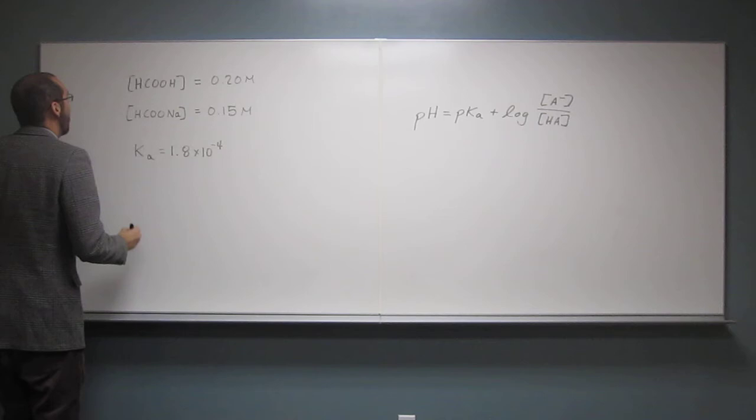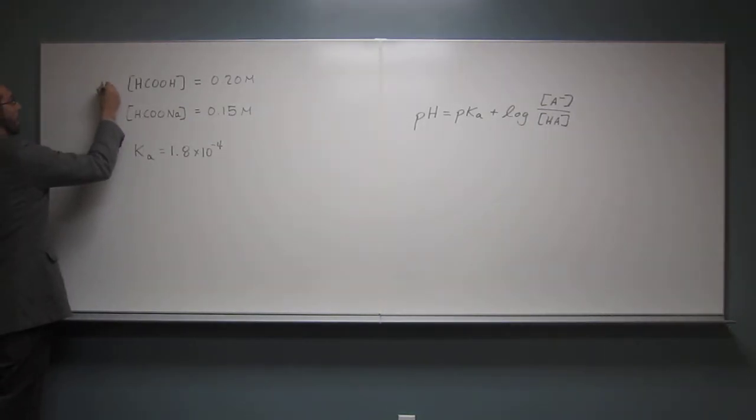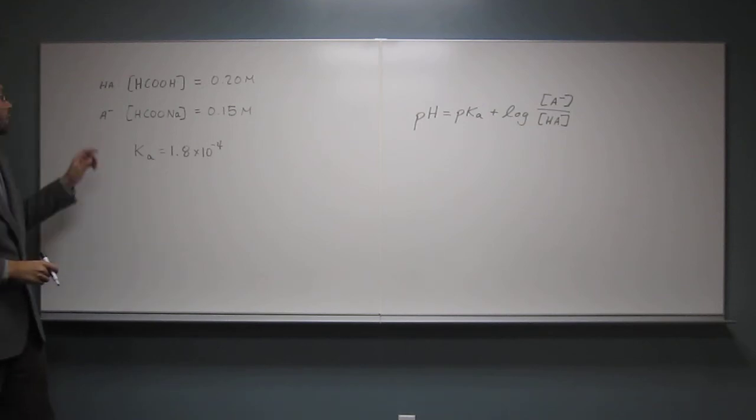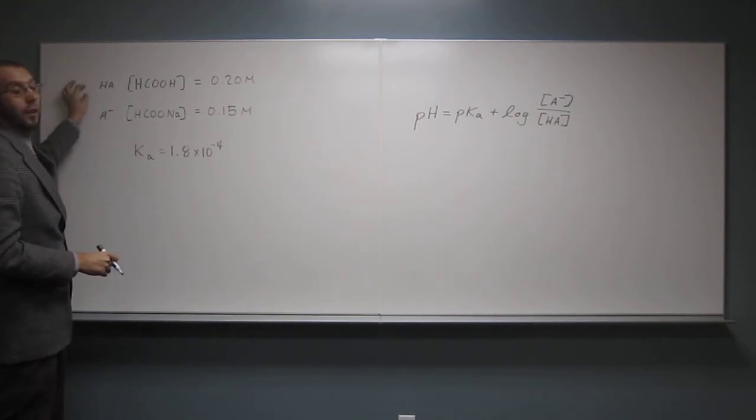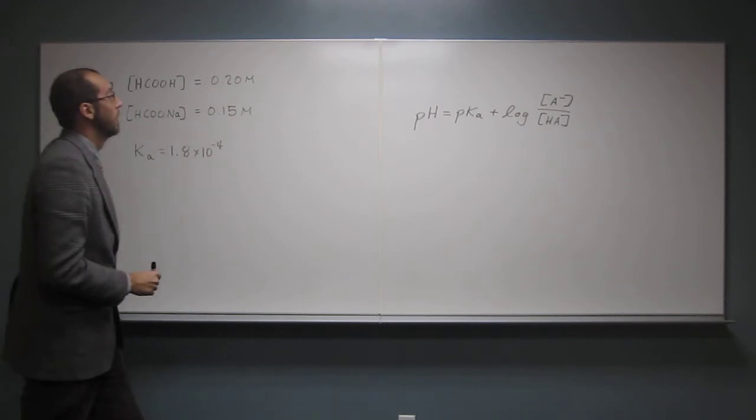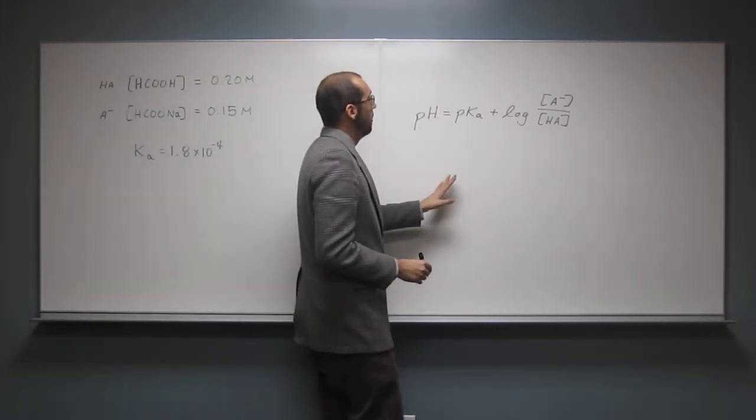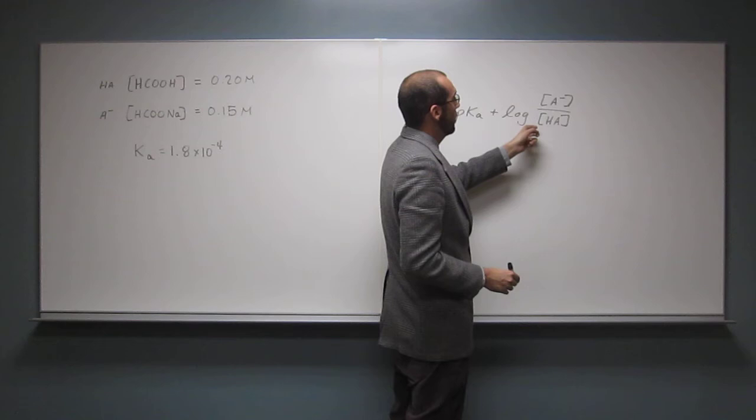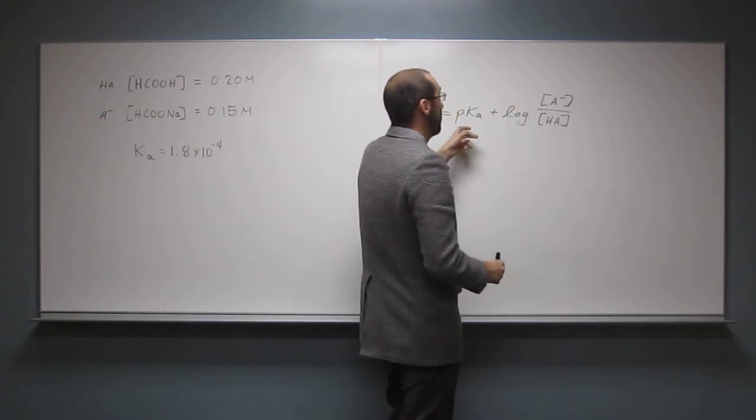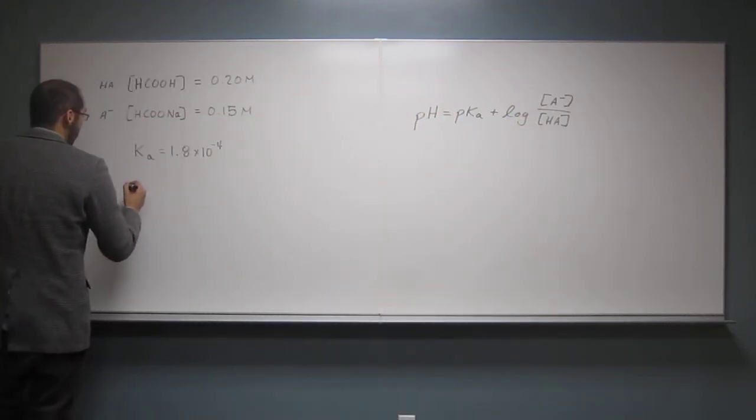So which one's A minus and which one's HA? The conjugate base is A minus. So we've got the concentration of those in molarity, but we don't have the pKa, right? So how do we do the pKa? Remember the pKa is the negative log of the Ka.